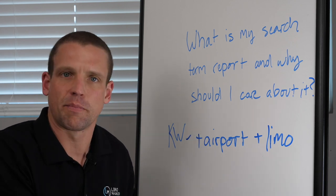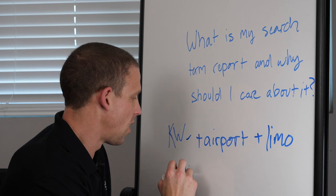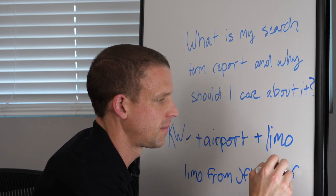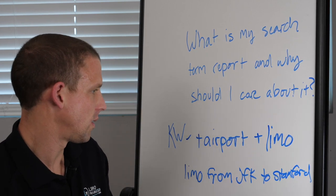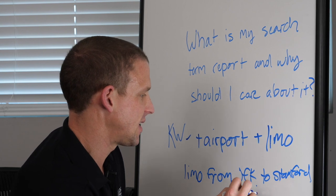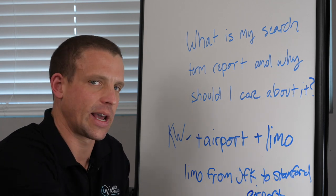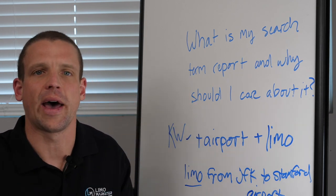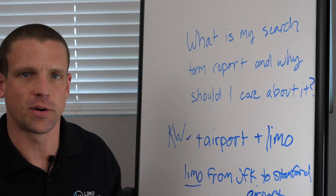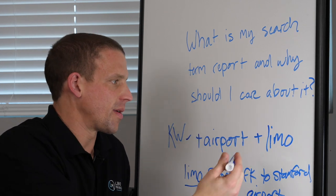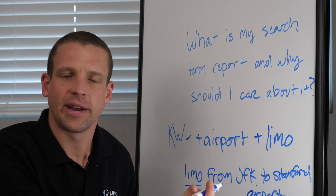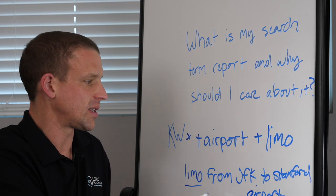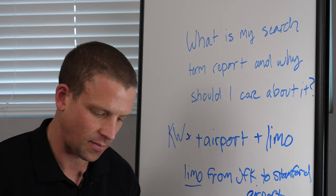When this keyword gets triggered by someone's search - let's say someone searches 'limo from JFK to Stanford,' or 'JFK Airport to Stanford, Connecticut' - because there is this and this, it's going to trigger this keyword and show an ad. The algorithm essentially matches it up with this keyword, it shows your ad, they click on your ad, and then when you check this box next to the airport limo keyword, it's going to show this is one of the searches somebody actually made.